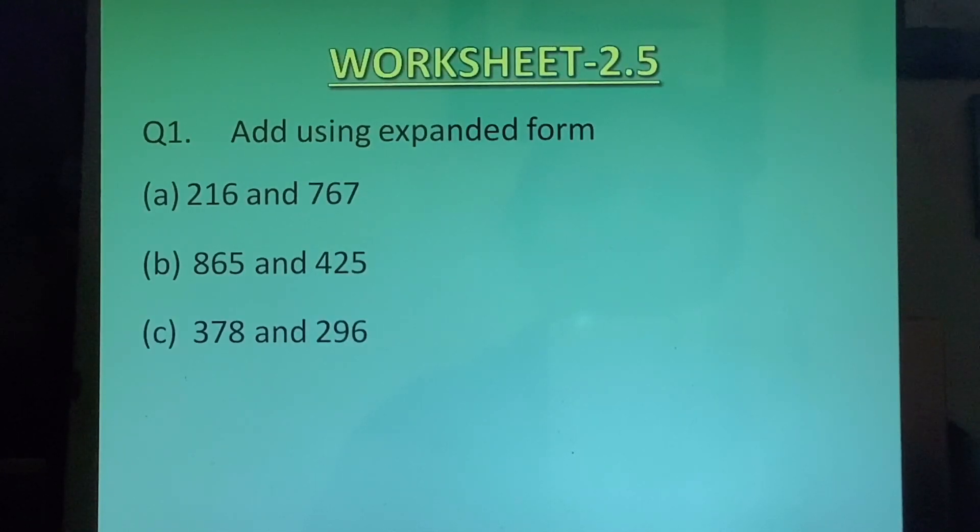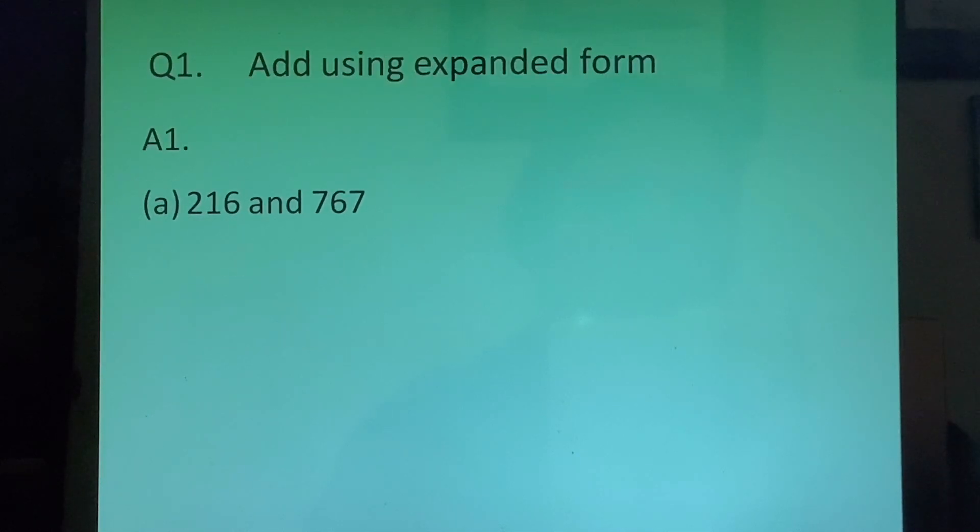The first question was add using expanded form. The first one 216 and 767. So this we will write it as 216 plus 700 plus 67 which will give us 916 plus 67. Again now we will split up 67. So 916 plus 60 plus 7 which will give us 976 plus 7 which is 983.